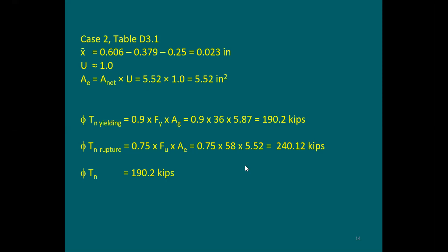The effective area is going to be the same as the net area of 552. Running the two equations: for yielding, using a phi factor of 0.9, yield strength of 36, and the cross-section area gives 190 kips. For rupture, using a phi factor of 0.75, ultimate strength of 58, and effective area of 552 gives 240 kips. This section is failing in yielding before rupture, so 190.2 kips controls the design and is the tensile capacity of this channel connection.